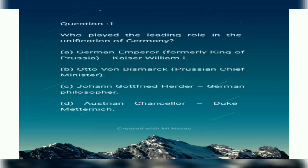Q1. Who played the leading role in the unification of Germany? Option A: German Emperor Kaiser William I. Option B: Otto von Bismarck, Prussian Chief Minister. Option C: John Gottfried Herder, German philosopher. Option D: Austrian Chancellor Duke Metternich.